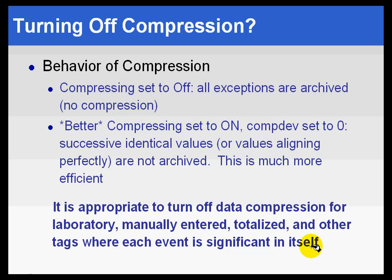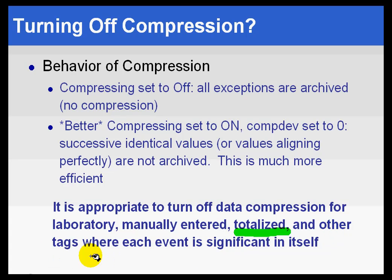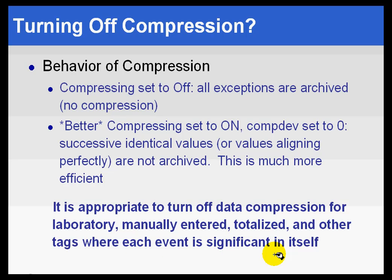I should point out that for some tags, you really don't want compression on at all. For example, with lab data — taking lab samples and measuring viscosity — you hope that every single time you take a sample, it's exactly the same result, meaning you're doing very consistent production. So obviously for things like lab data, totalizations, where you're hoping to make the same amount of product every day, where the event itself is significant in and of itself, that's something where you would want to simply turn compressing off for those tags.